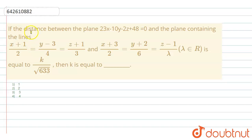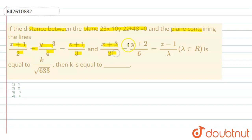Hello. The question given is: if the distance between the plane 23x - 10y - 2z + 48 = 0 and the plane containing the line (x+1)/2 = (y-3)/4 = (z+1)/3, and the line (x+3)/2 = (y+2)/6 = (z-1)/λ where λ belongs to ℝ, is equal to k/√633, then k is equal to what. We have to find the value of k.